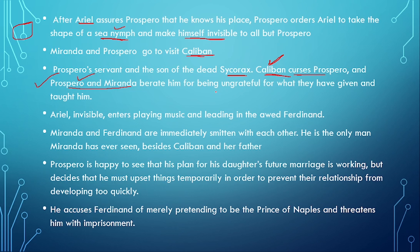Here we are talking about imperialism and colonialism — European people like Prospero and Miranda versus African and third-world-country people such as Indians, Pakistanis, Africans, and Asian people, which is represented by Caliban. Prospero and Miranda berate him for being ungrateful for what they have given and taught him.